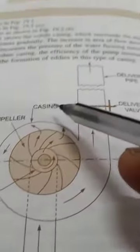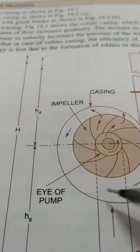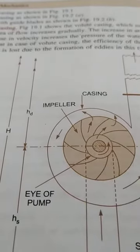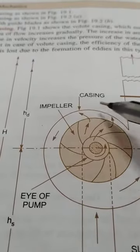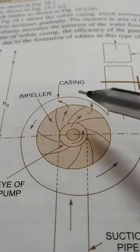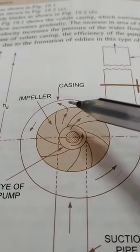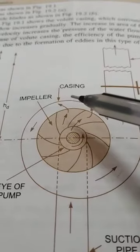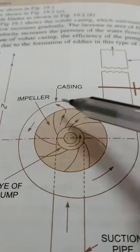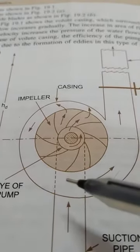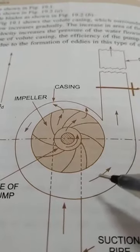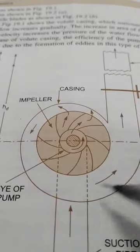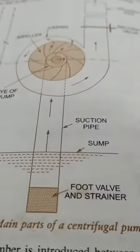The second part is the casing. Whatever surrounds the impeller is called the casing — it provides protection for the impeller. A very important point is that the casing must be airtight; air should not enter. If air enters, it is difficult to convert mechanical energy into pressure energy. This airtight casing helps convert kinetic energy into pressure energy at the outlet — that is the purpose of the casing.